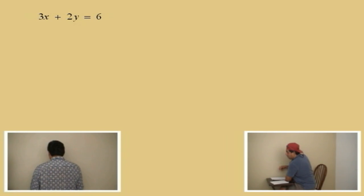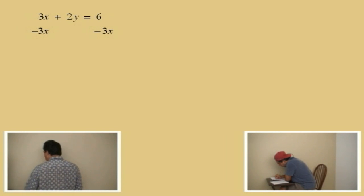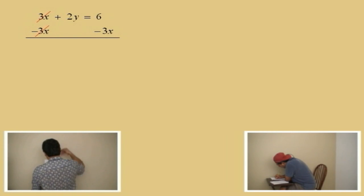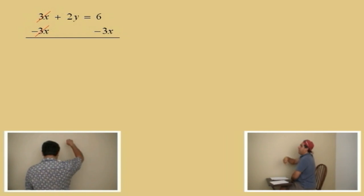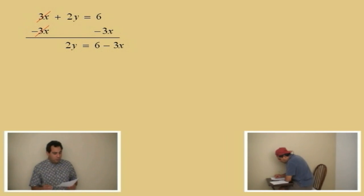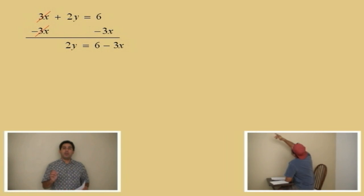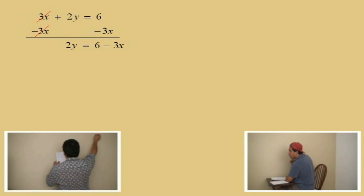Subtract 3x from both sides. That's right — subtract 3x from both sides. Bring down your line. 3x subtract 3x gives you zero, so those are canceling out. What's left on the left-hand side, Charlie? 2y. And the right-hand side? 6 minus 3x. Now, we're going to use the commutative property for addition, and 6 subtract 3x is the same as negative 3x plus 6. Negative 3x plus 6. Very good.